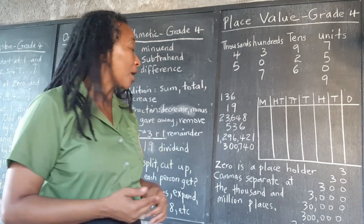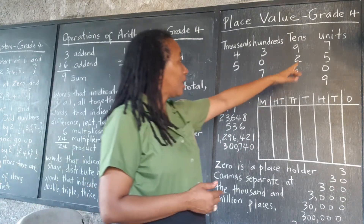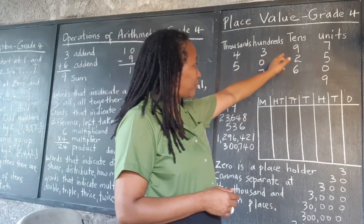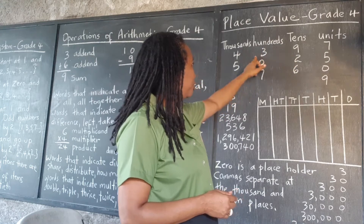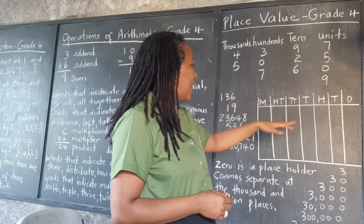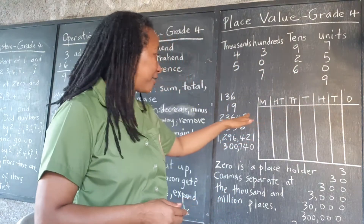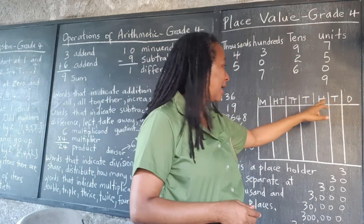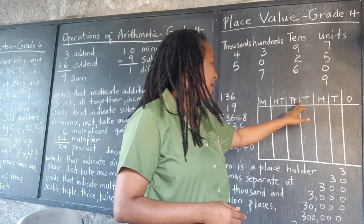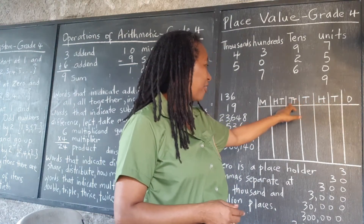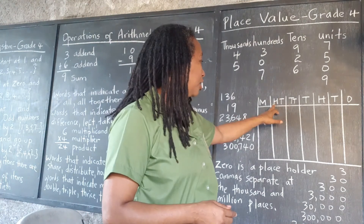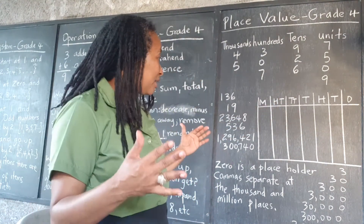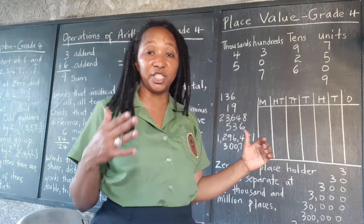The units or ones are followed by groups of tens, hundreds, thousands, and if you look at this chart here, we have the ones or units, then the tens, hundreds, thousands, ten thousands, hundred thousands, and millions. We're focusing on those seven place values.